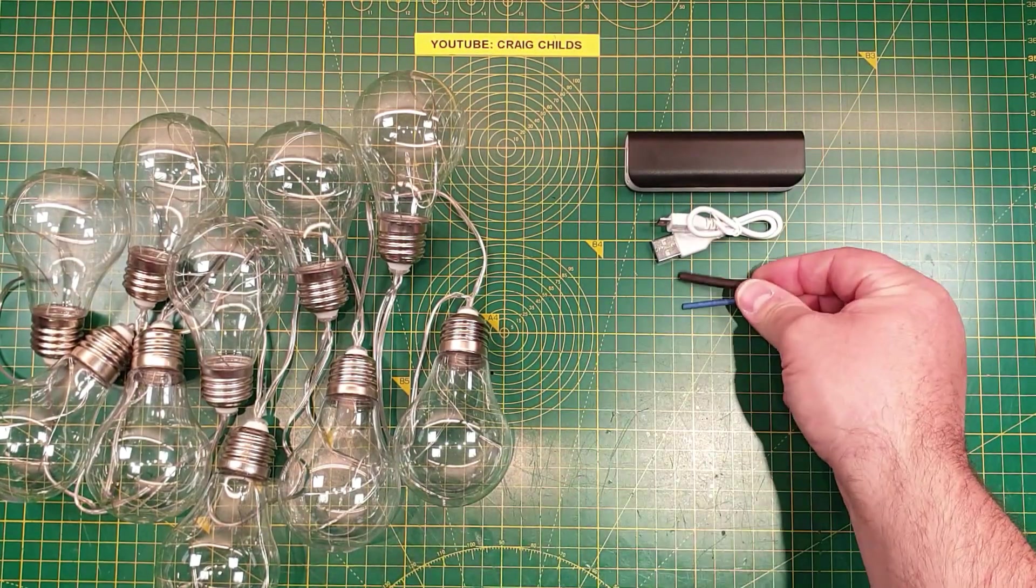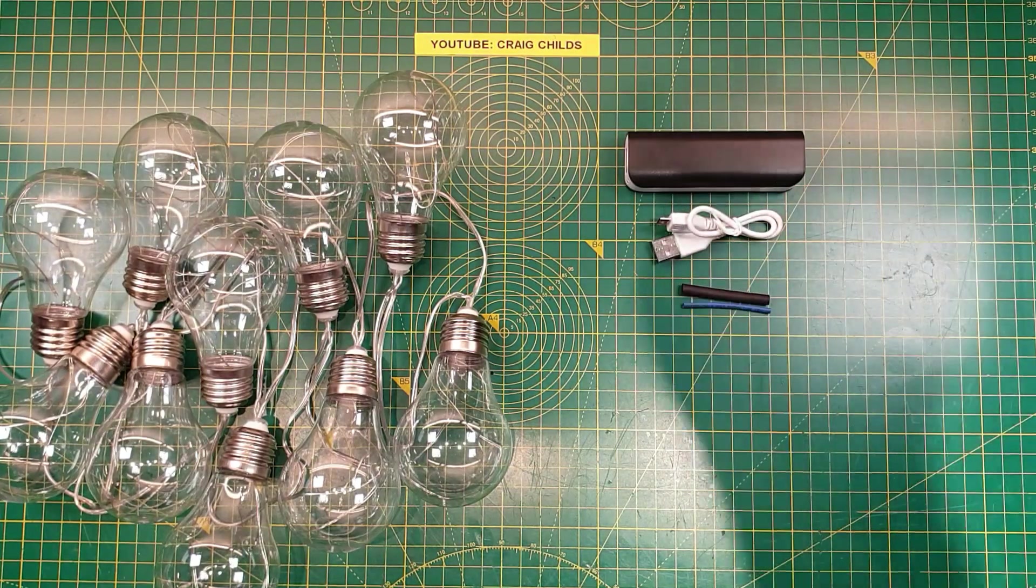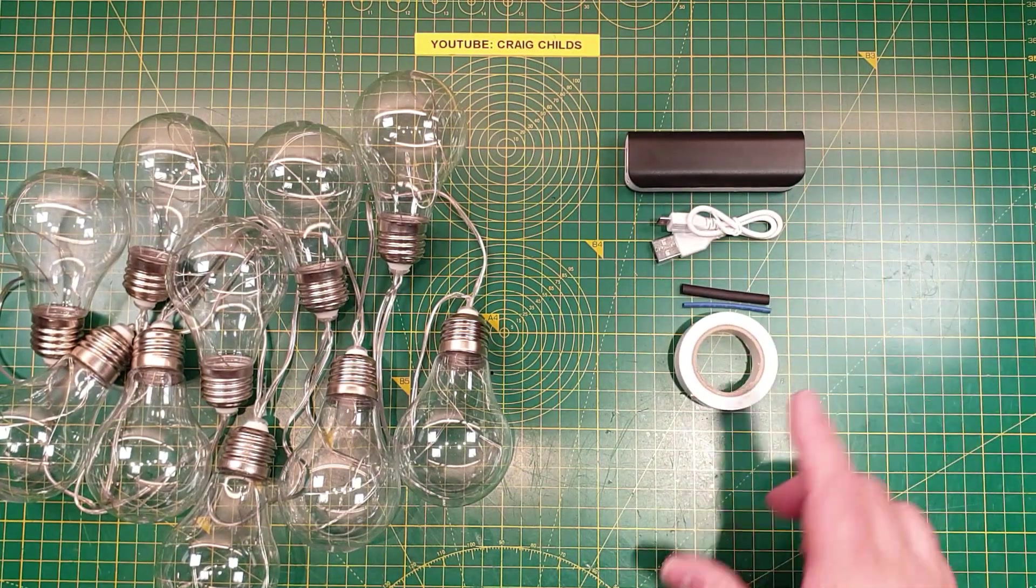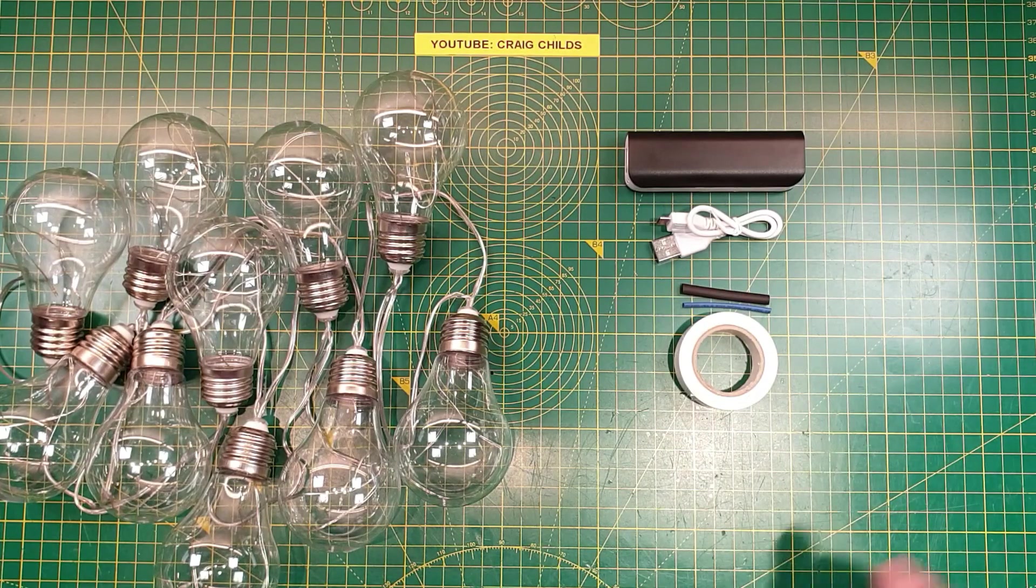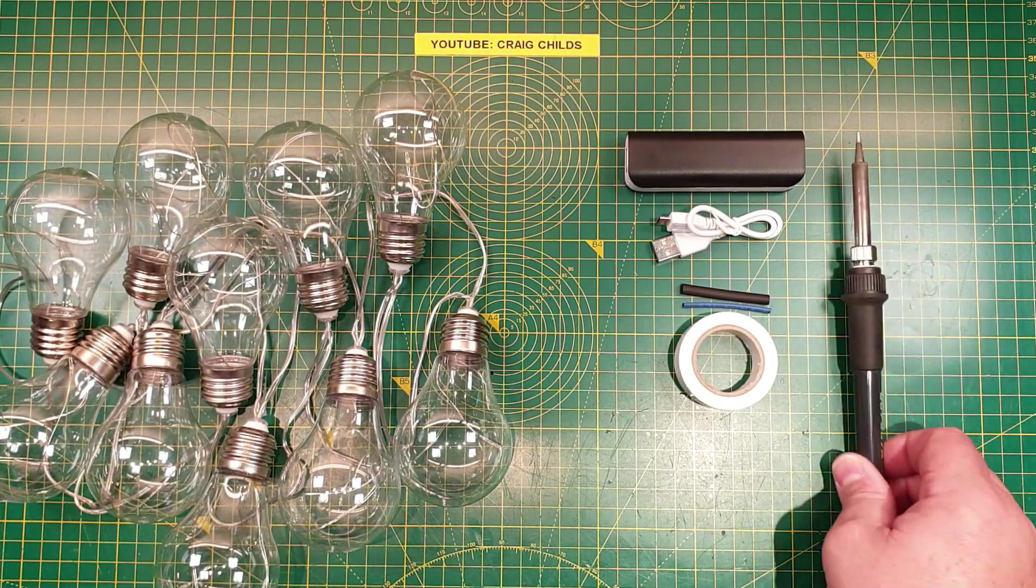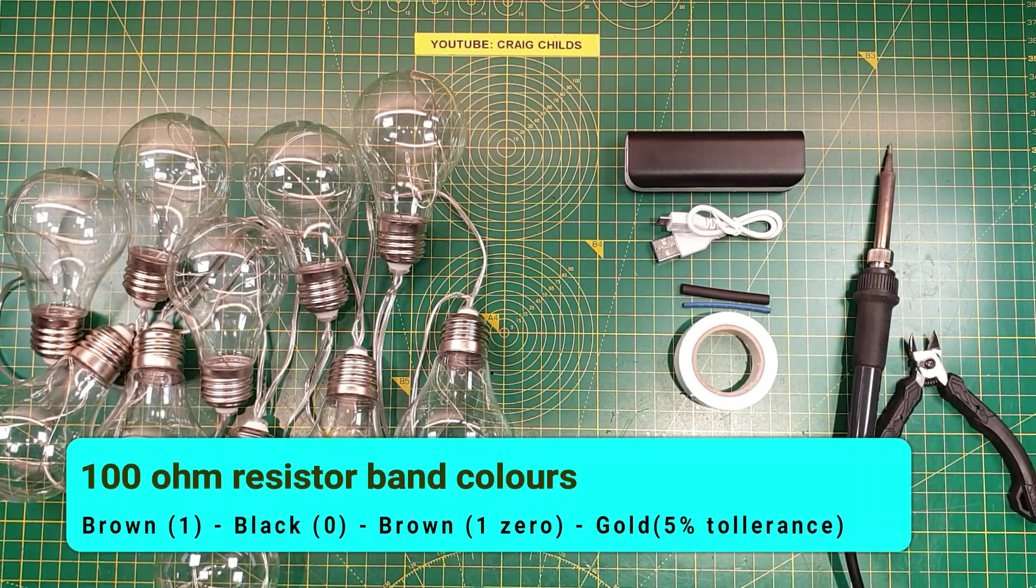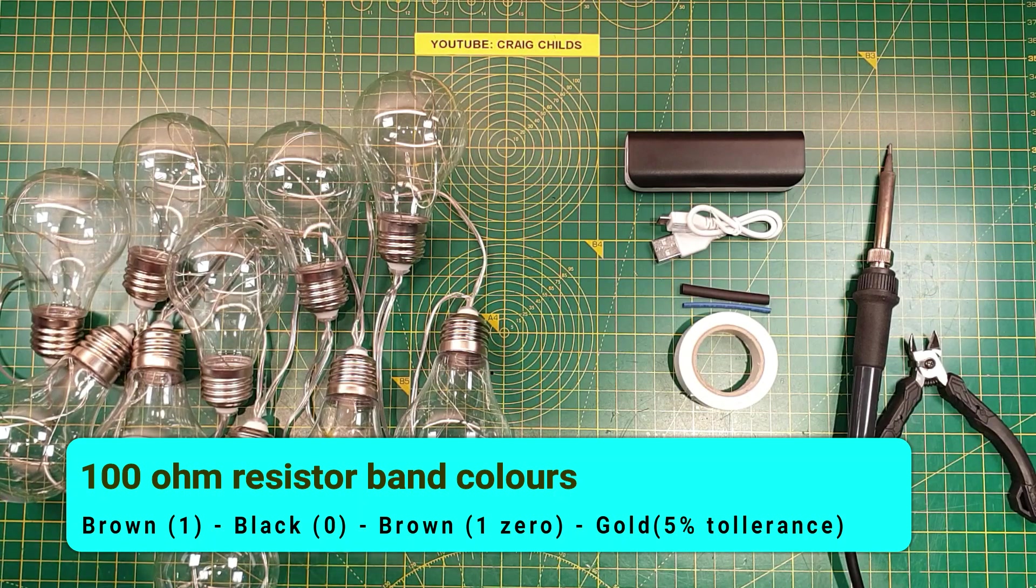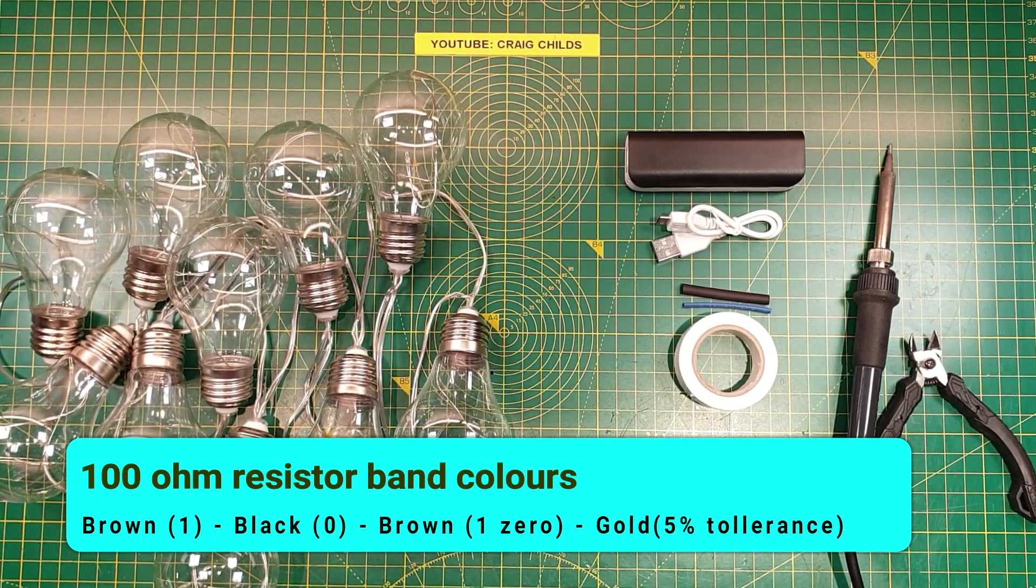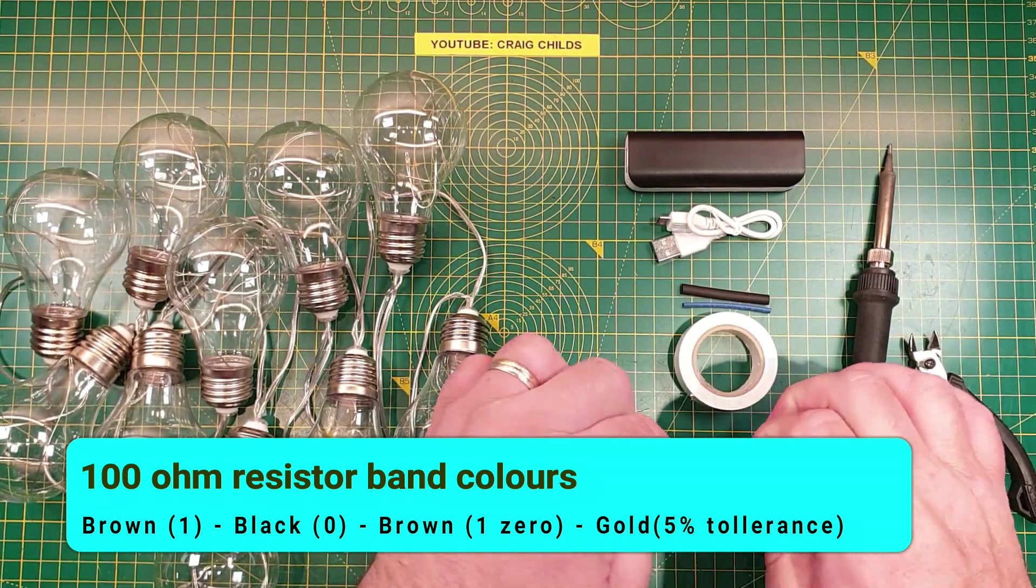You'll need either some heat shrink or some insulating tape to seal it up once you've soldered. You'll need a soldering iron and a pair of snips and you'll also need one resistor. In this case the resistor is 100 ohms.